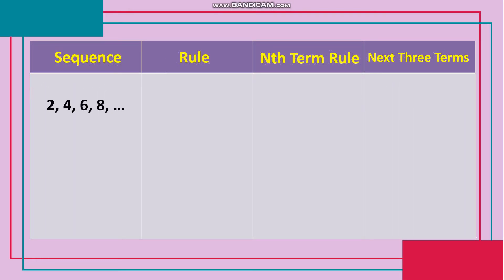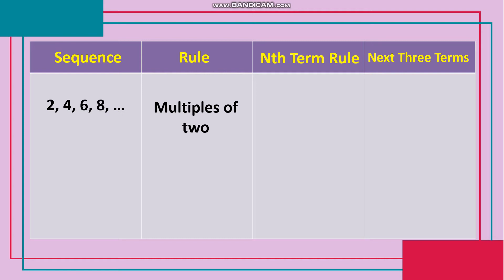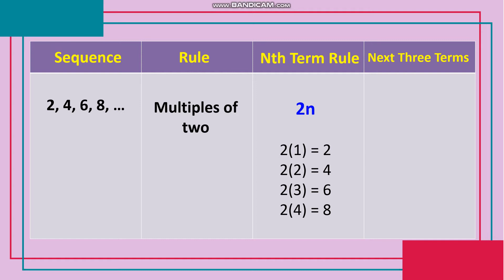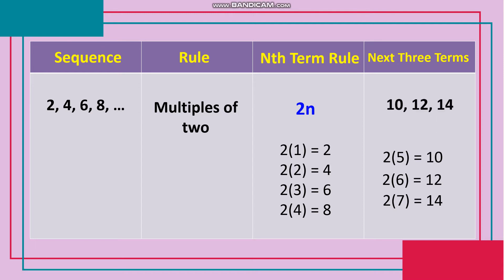Sequence: 2, 4, 6, 8, and so on. Rule: multiples of 2 or skip counting by 2's. Nth term rule: 2n or 2 times n. Let n be the 1st term: 2×1=2; 2nd term: 2×2=4; 3rd term: 2×3=6; 4th term: 2×4=8. To get the next three terms: 5th term: 2×5=10; 6th term: 2×6=12; 7th term: 2×7=14. Therefore, the next three terms are 10, 12, 14.